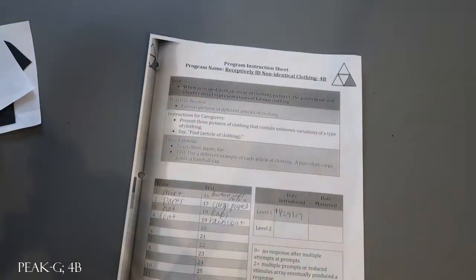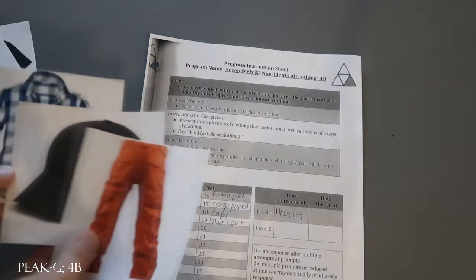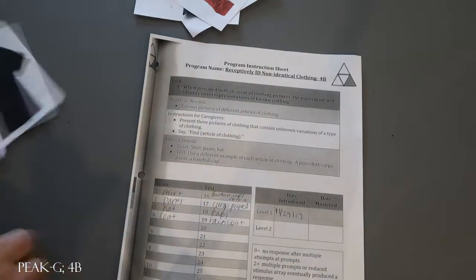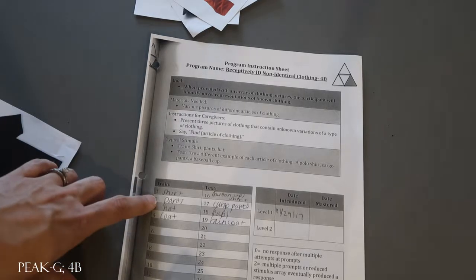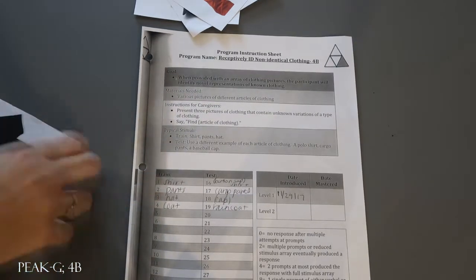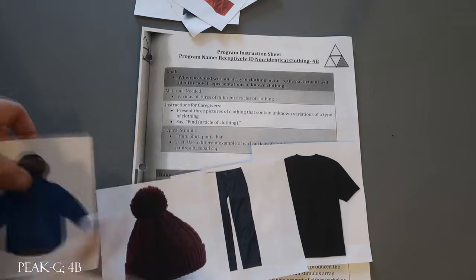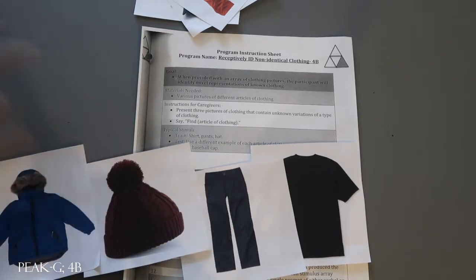And so then you're just going to run it really easily where you're going to present the pictures. You're either going to present the test class or present the train class depending on which class you're working on. So if I'm doing pants for train I'm only going to put out train stimuli and have them find pants.